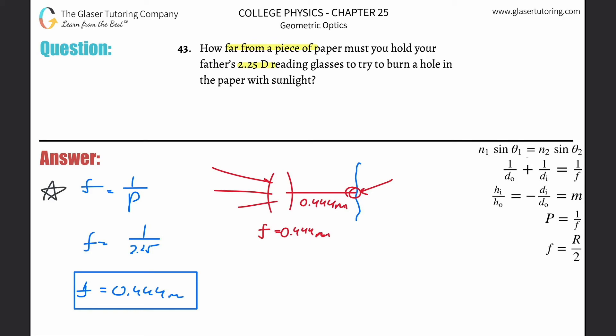So we would have to hold his reading glasses 0.444 meters away because at 0.444 meters away, all of the rays coming into this lens are focused right at that point - highest intensity of light at that point. So guys, that's it, I will see you in the next problem. Don't try this at home, don't do it, take care.